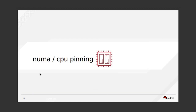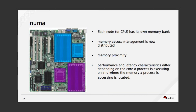NUMA and CPU pinning: each CPU has its own internal memory bank. Using NUMA is a good approach to set up your environment because you can get better performance by using memory close to your processor. Without NUMA, the hypervisor just goes and tries to access all memory available in the hardware across all CPUs. Using NUMA, the processor knows which domain of memory it should access, which gives you performance based on memory proximity.